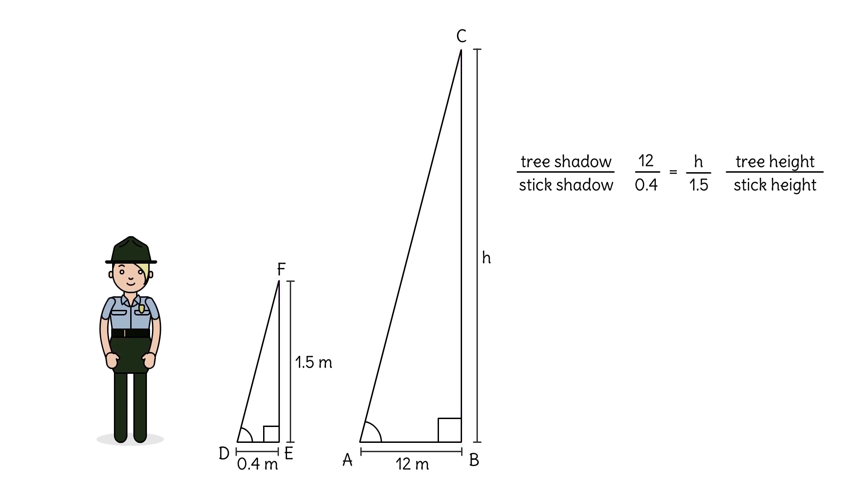We can solve this proportion quickly by cross multiplying. 0.4H equals 12 times 1.5. So 0.4H equals 18. Dividing by 0.4 gives us 45 meters.